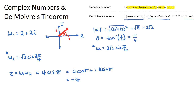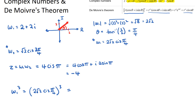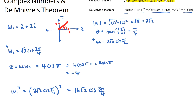A small example: if I wanted to raise W1 to the power of 3, I first put it into modulus-argument form: (2√2 cis(π/4))³. By de Moivre's theorem, this is (2√2)³ cis(3π/4). Now (2√2)³ = 2³ × (√2)³ = 8 × 2√2 = 16√2. So W1³ = 16√2 cis(3π/4).